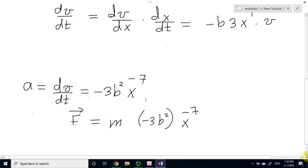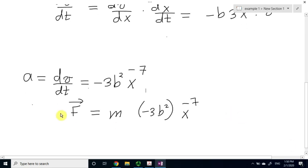Finally, to find the force, we just multiply the mass by the acceleration, and the result is mass times minus 3b squared x to the minus 7. Again, here the force is negative, meaning it's to the left, so the force is an attractive force, not a repulsive force in this exercise.